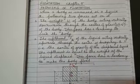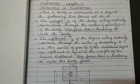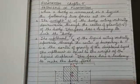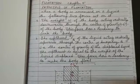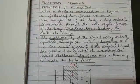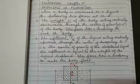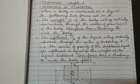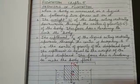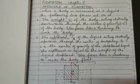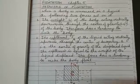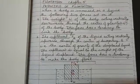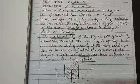Two: the up thrust Fb of the liquid acting vertically upwards through the center of buoyancy B — that is, the center of gravity of the displaced liquid. The up thrust is equal to the weight of the liquid displaced. This force has a tendency to make the body float.